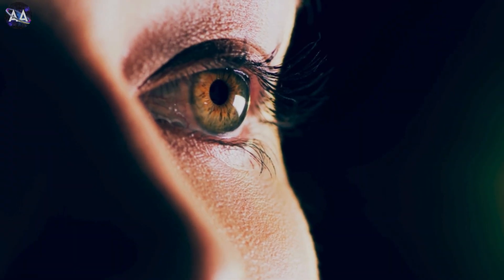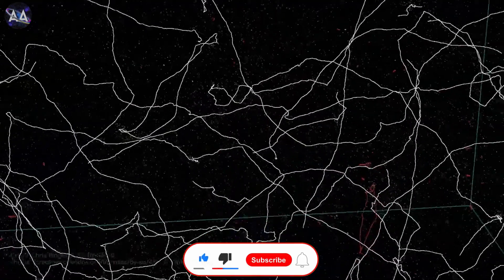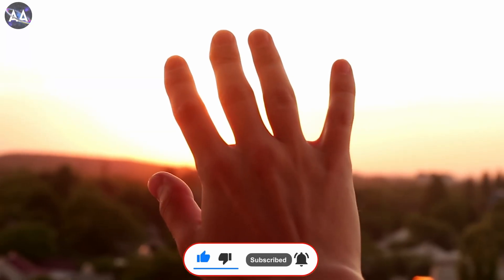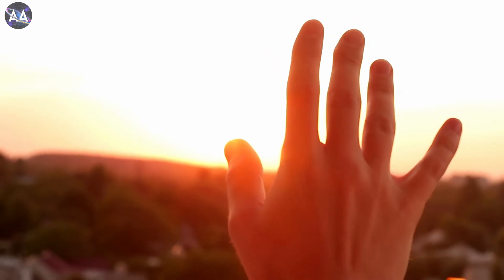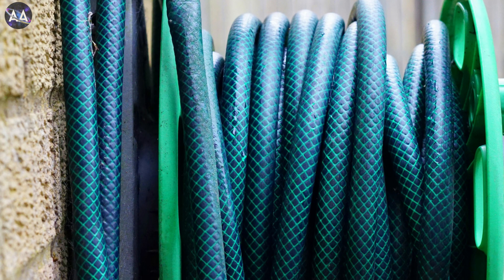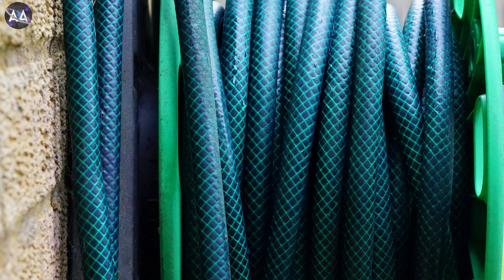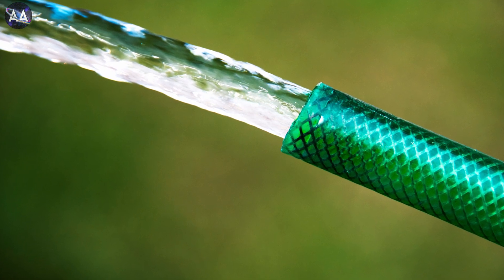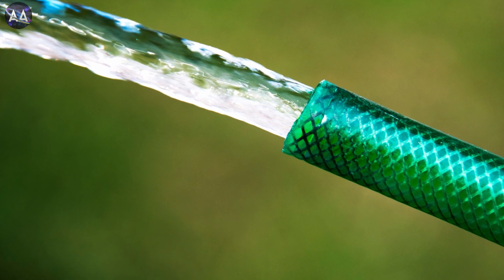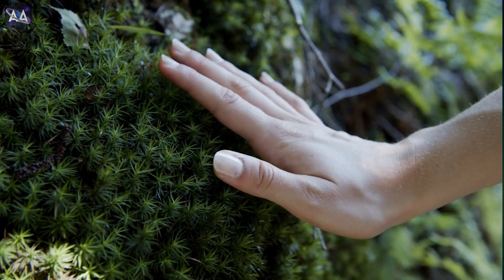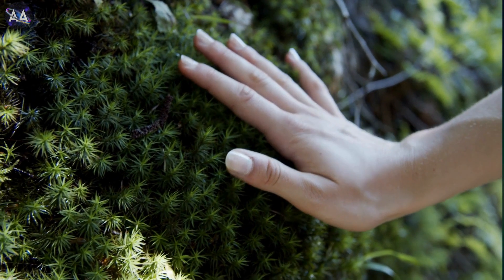But why don't we see these extra dimensions? Well, according to string theory, these extra dimensions are curled up really small, so small that we can't detect them in everyday life. You can think of them like a garden hose. From far away, the hose looks like a straight line, but if you get up close, you can see it's round and has more structure. The extra dimensions in string theory are kind of like that. They're all around us, but too small for us to notice.